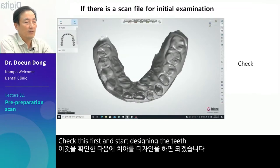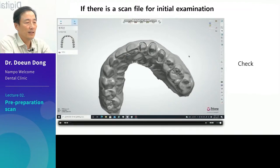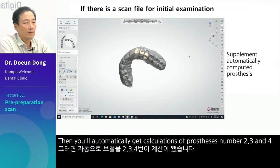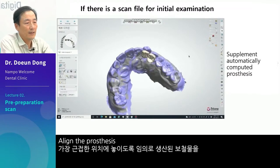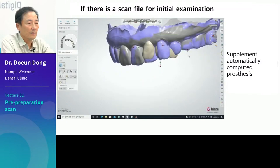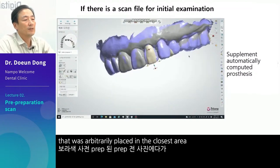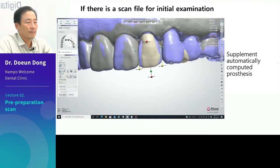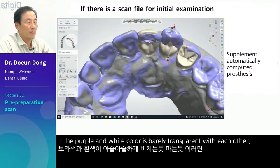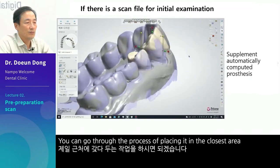Check this first and start designing the teeth, and we can move to the next series of prosthesis-making steps. Then you'll automatically get calculations of prostheses number 2, 3, and 4. You have to modify the prosthesis a little bit. Align the prosthesis that was arbitrarily placed in the closest area, closer to the purple image, which is the image before preparation. If the purple and white color is barely transparent with each other, it means it is aligned well. You can go through the process of placing it in the closest area.